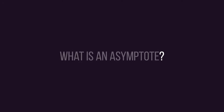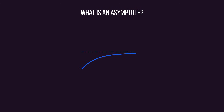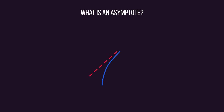First of all, we need to ask ourselves the question: what is an asymptote? An asymptote is a line which continually approaches a curve. The curve gets really, really close to the line, but it never quite touches it. Why?